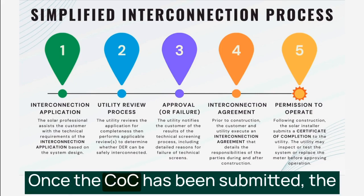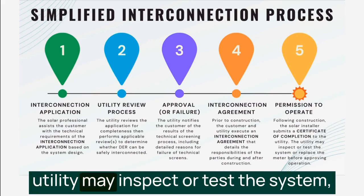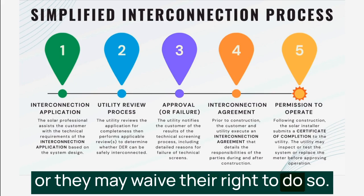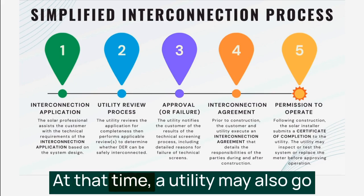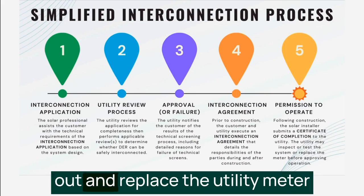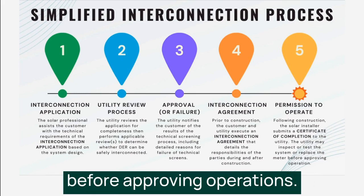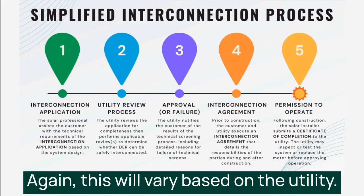Once the COC has been submitted, the utility may inspect or test the system, or they may waive their right to do so. At that time, a utility may also go out and replace the utility meter before approving operations. This will vary based on the utility.